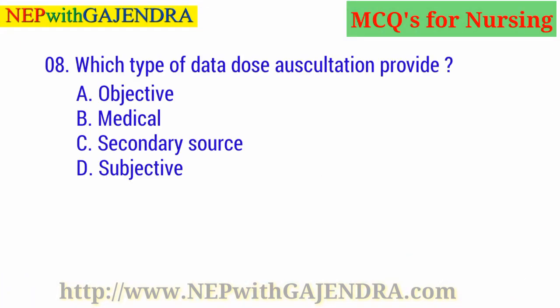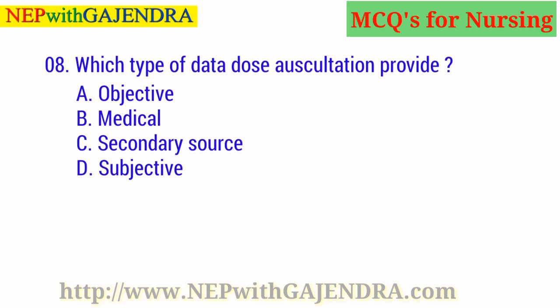Which type of data does auscultation provide? A. Objective. B. Medical. C. Secondary source. D. Subjective. The right answer is A: Objective.